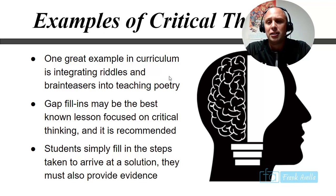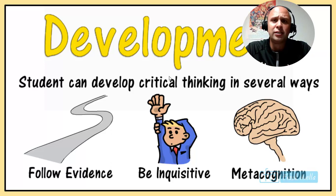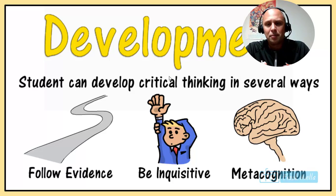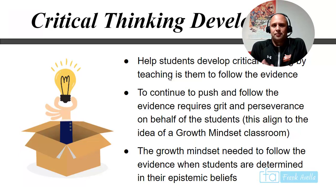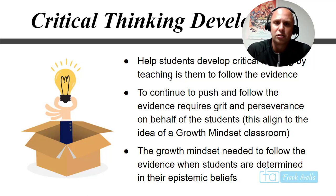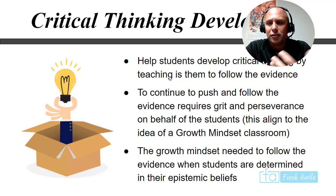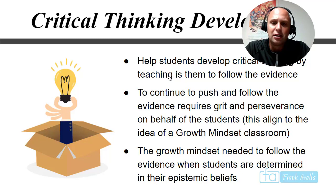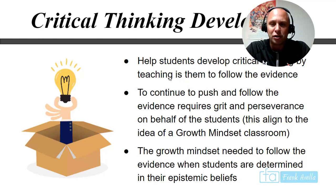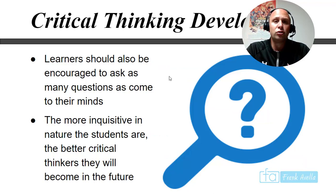Students can develop critical thinking in several ways. Follow the evidence — by being inquisitive and using metacognitive strategies. Help students develop critical thinking by teaching them to follow the evidence, which requires grit and perseverance. This aligns with the 'growth mindset' classroom, which has become very popular. When students are determined in their epistemic beliefs and have that growth mindset, grit, and perseverance, they're going to be able to solve problems. Effort and believing in yourself is a big part of critical thinking.